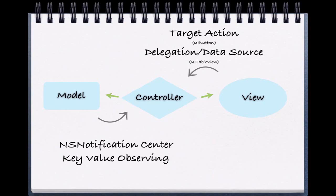The other way we can communicate from the view to our controller is through delegation or data source. Delegation is a pretty advanced topic; however, due to the design of so many of Apple's view objects, we were forced to cover this early in the course. If this doesn't make immediate sense to you, give it some time. It took me quite a while when I was first learning how to program to fully understand delegation.